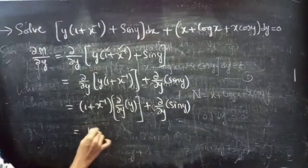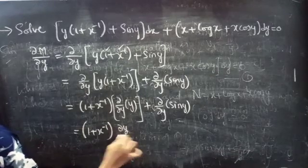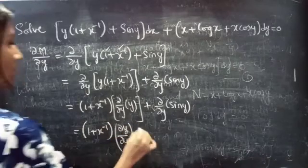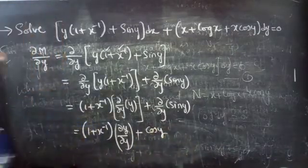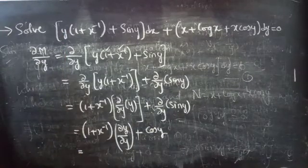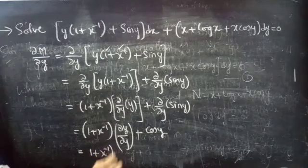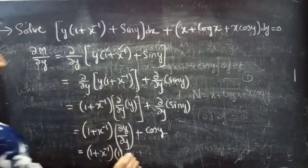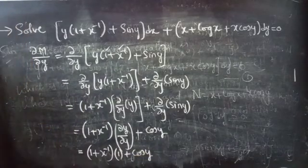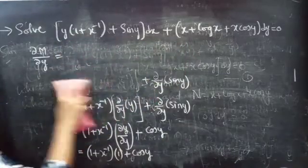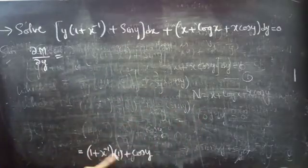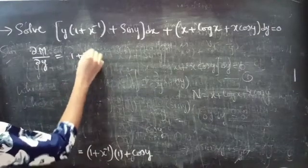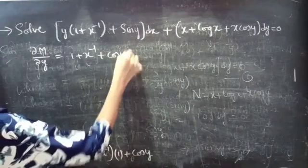This equals to (1 plus x inverse) into ∂y/∂y, plus the derivative of sin y with respect to y is cos y. So the derivative of y with respect to y is 1, giving us (1 plus x inverse) plus cos y. So ∂M/∂y equals 1 plus x inverse plus cos y.